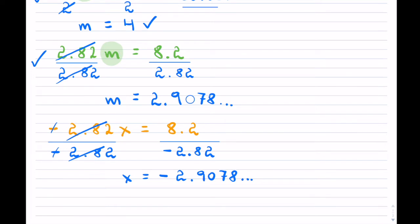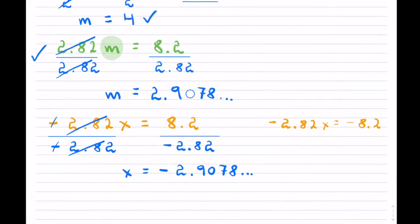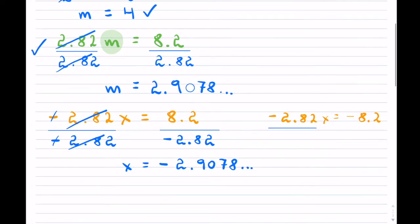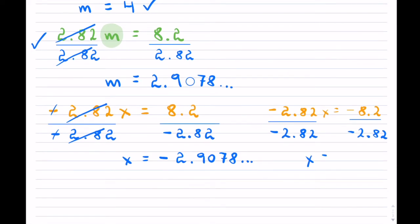The negatives can be on both sides. If you have a negative on the opposite side as well, that's no different. You simply divide both sides by the negative number. The negatives on the left cancel, the number cancels, and on the right-hand side the negatives cancel too because negative divided by a negative is a positive. So the answer comes back to 2.9078 and so on.